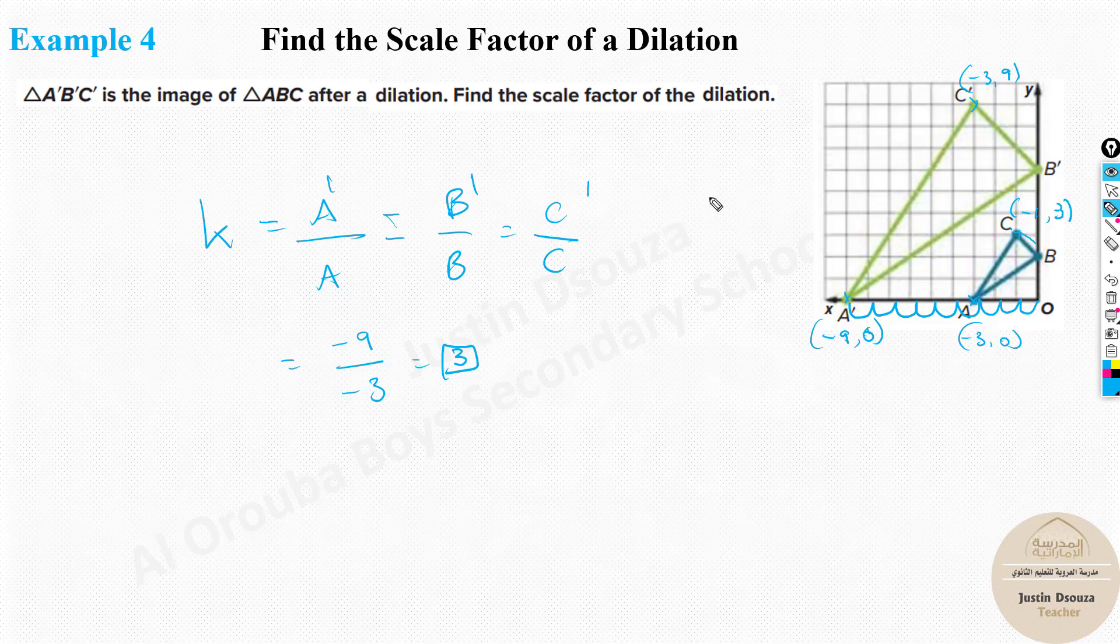So here if I'm just solving for C dash, it will be minus 3 divided by minus 1 for the x coordinate separately. This is 3. And the y coordinate separately, 9 divided by 3 is 3. So you can see the scale factor is repeating always as 3, 3, and 3.